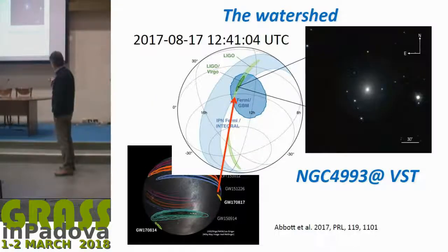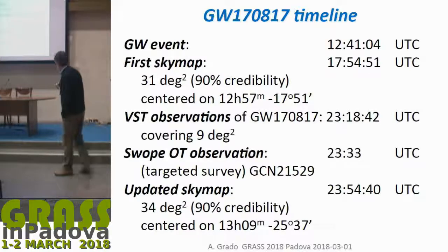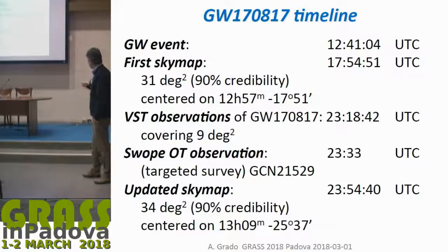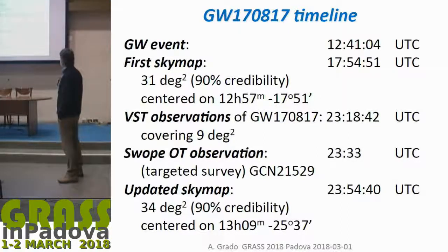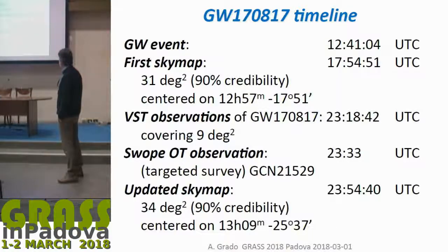We were also clearly observing the kilonova event. To give the timeline: the first alert came at 17:54, we started observations at 23:18, a source was found at 23:33, and then a refined alert came at 23:54 with a shifted center.